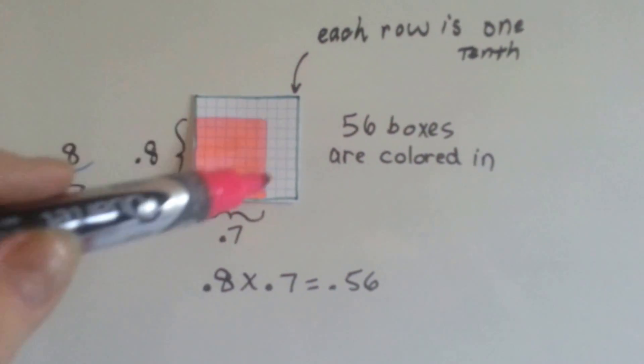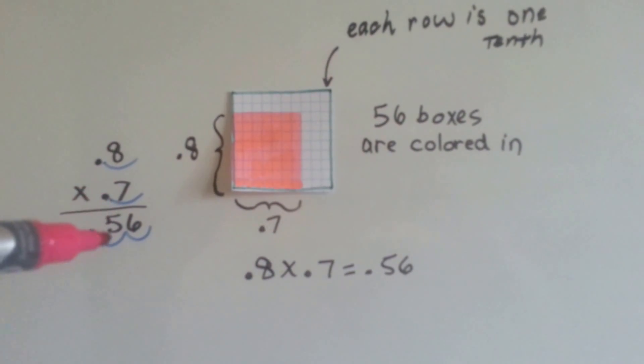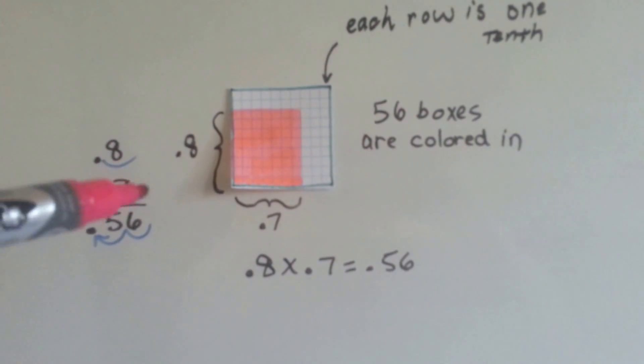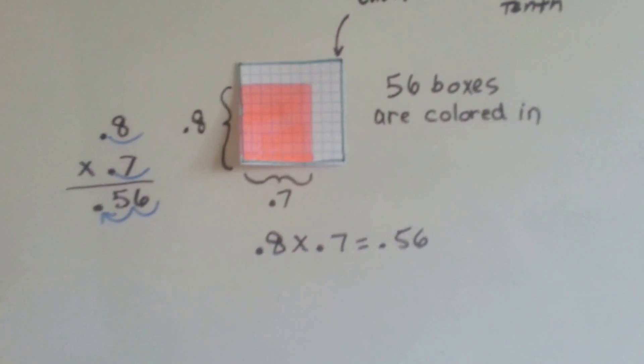Out of these 100 boxes, 56 are colored in. Doing it the stacked way, 8 times 7 is 56, we hop 1, 2, so in the answer we hop 1, 2. 56 hundredths.